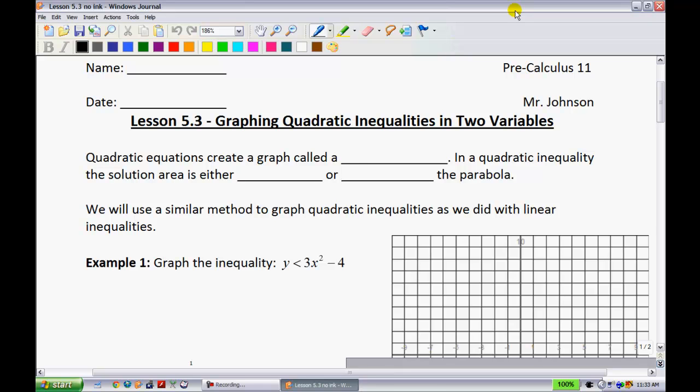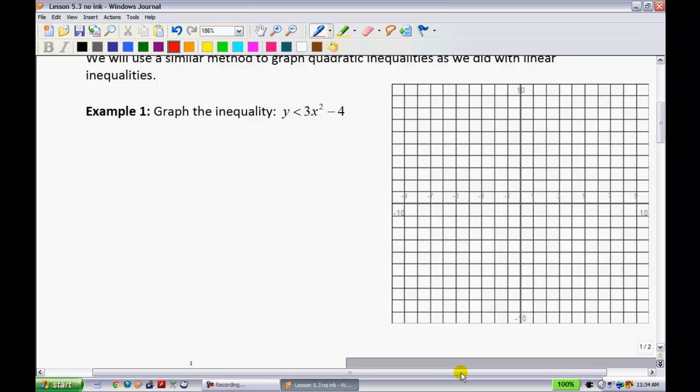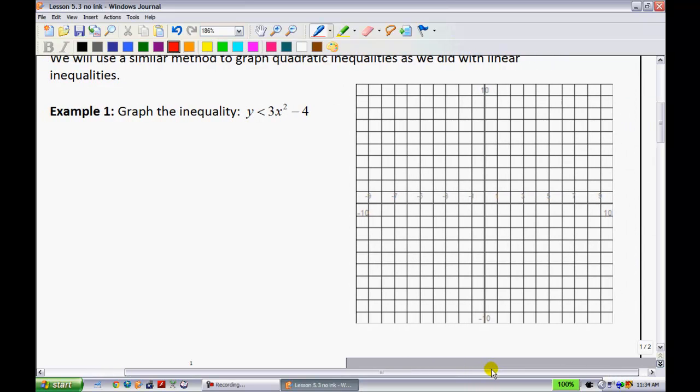Quadratic equations create a graph called a parabola. In a quadratic inequality, the solution area is either above or below the parabola. We're going to use the exact same method that we did before. You'll graph it using some of the skills from previous units to graph parabolas, then use a test point, preferably 0,0, to figure out whether you should shade above or below your graph. Let's get cracking here.